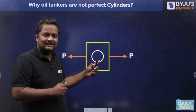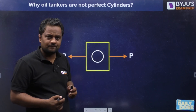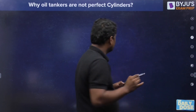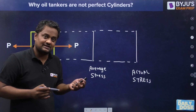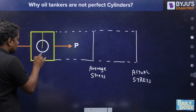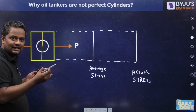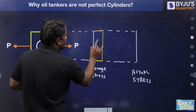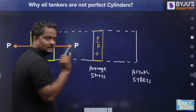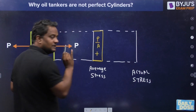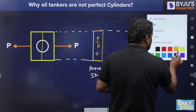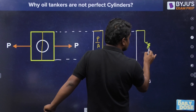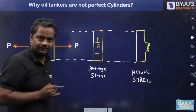Suppose this is a plate with a hole, and we are pulling it with force P. In this plate, the net area after deducting the hole area gives an average stress of P/A — and it is tensile. But if I write the actual stress distribution, it looks different. Whenever there is a discontinuity, there is stress concentration — the stress increases at that point.